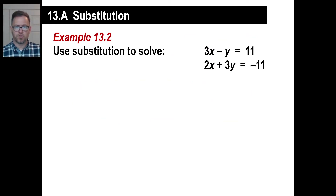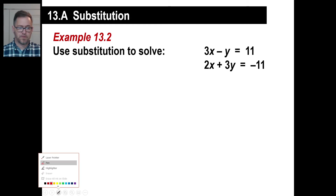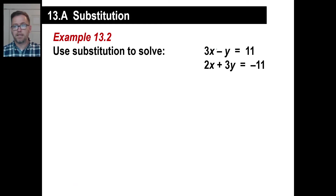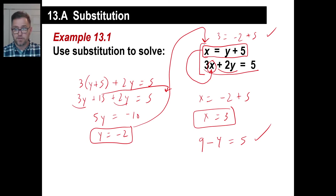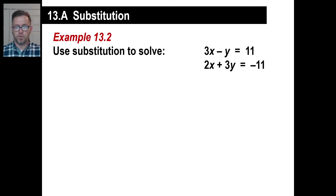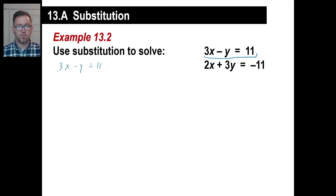Now these get a little more interesting. The only difference is they're going to make you move everything over to the other side except for one variable. So in this case, you're forced to solve for y. There's only one y, but it's negative. So we take the first equation: 3x minus y equals 11. Moving things over, that turns into negative y equals 11 minus 3x.